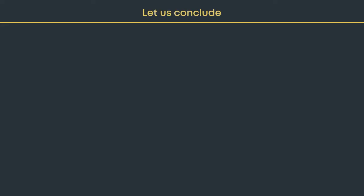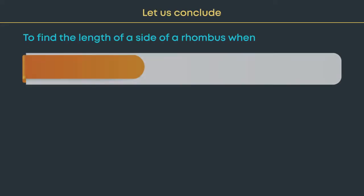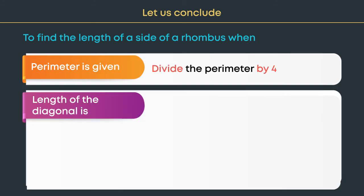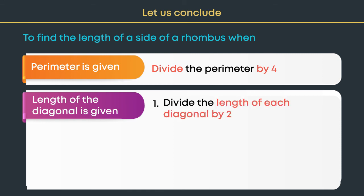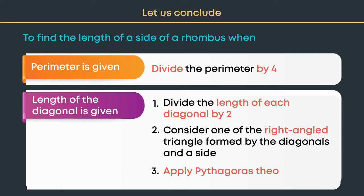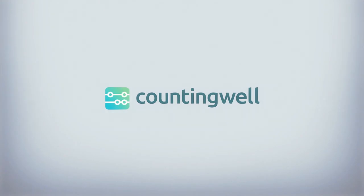Let us conclude. To find the length of a side of a rhombus: when the perimeter is given, divide the perimeter by four. When the length of the diagonals is given, divide the length of each diagonal by two, consider one of the right-angled triangles formed by the diagonals and a side, and apply Pythagoras theorem to find the side.